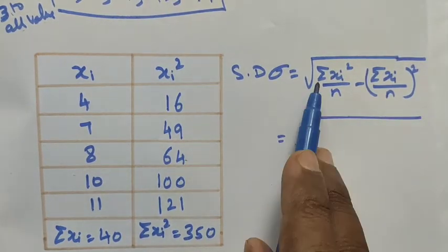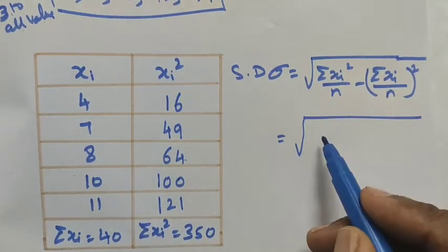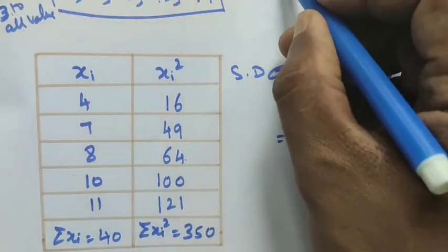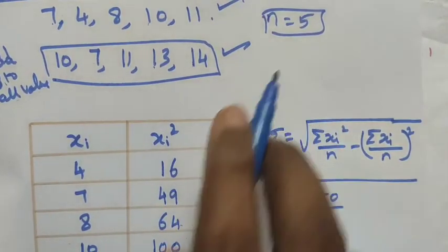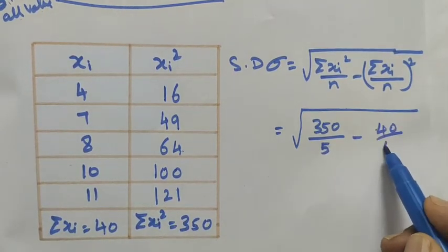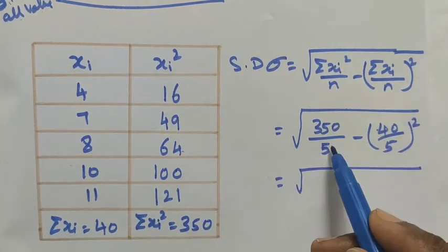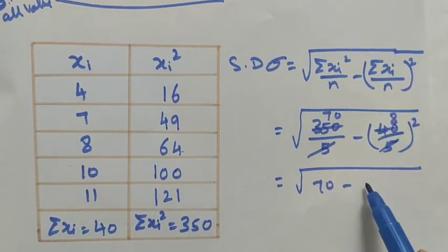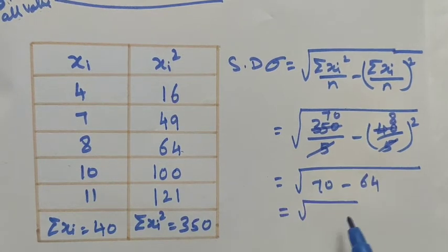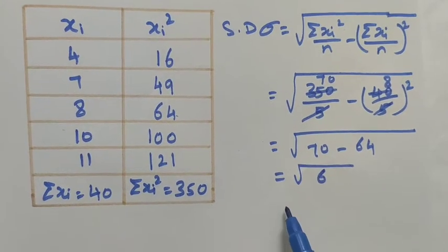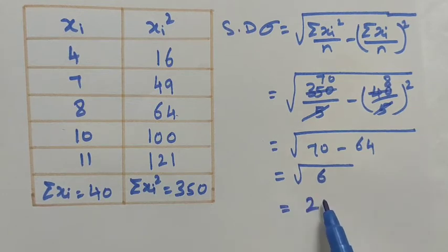The value of Σxi² is 350, divided by n equals 5 (since there are 5 data points), giving 70. The sum of xi is 4 + 7 + 8 + 10 + 11 = 40, so Σxi/n = 40/5 = 8, and 8² = 64. Subtracting: 70 minus 64 gives 6, so sigma equals root 6, which is approximately 2.45.